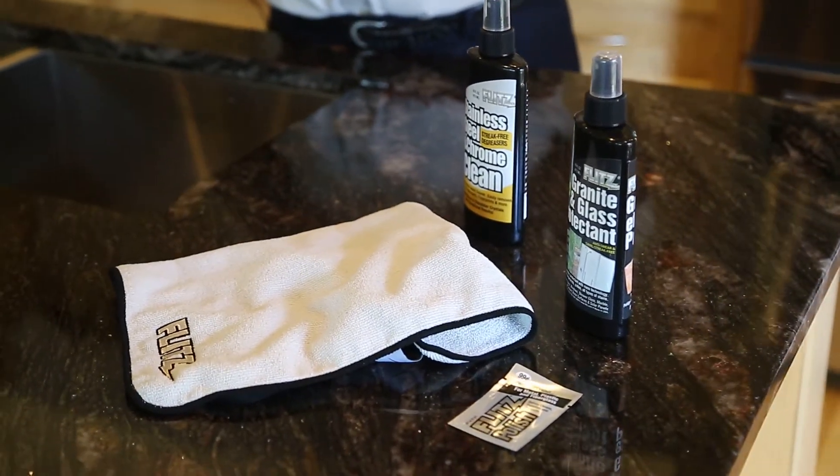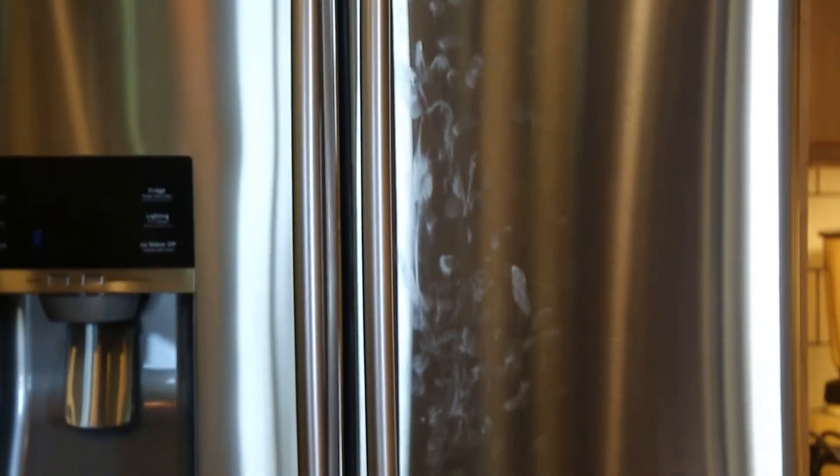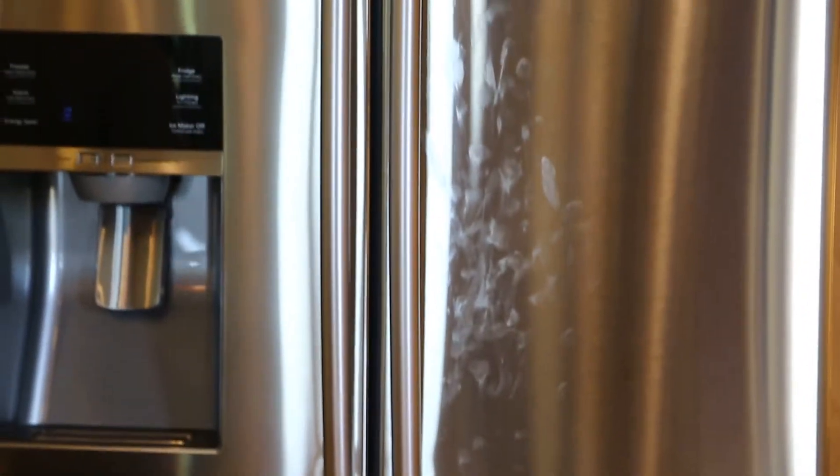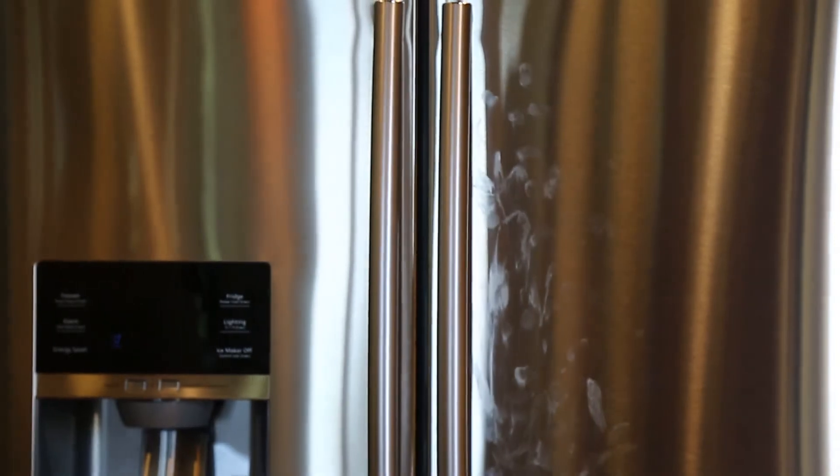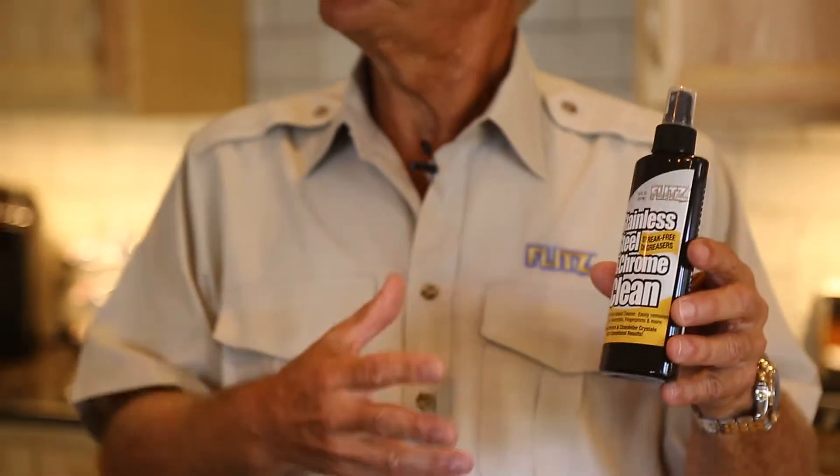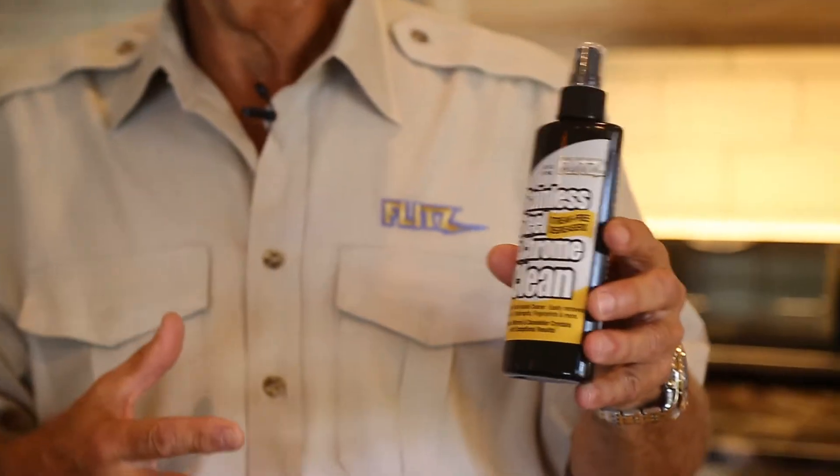Now the biggest reason why people hate stainless steel, they hate the fingerprints. And they get the fingerprints because all stainless steel cleaners leave an oily film behind. Now let me show you how our Flitz cleaner, and if you notice it says clean, how it removes the oil, grease, fingerprints, and all these different areas.